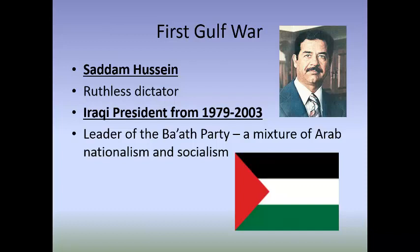Minority groups in Iraq, such as the Kurds, faced discrimination. Although Saddam Hussein had many opponents in Iraq, he kept them in control through his authoritarianism. He was the leader of the Ba'ath Party, which stood for a mixture of Arab nationalism and socialist ideas.